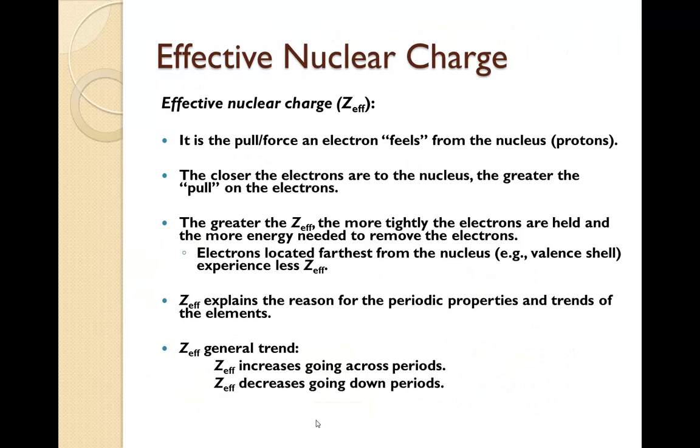Now let's talk about the effective nuclear charge, which is often called Z effective. Z referring to the number of protons, the atomic number. This is the pull or the force an electron feels from the nucleus. So this is the positive negative interaction, it's the attraction between the two. The closer the electrons are to the nucleus, the greater they feel the pull on the electrons.